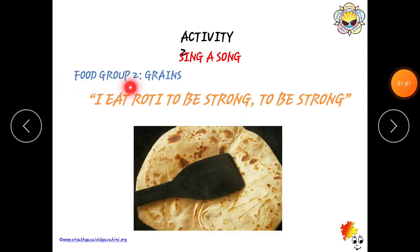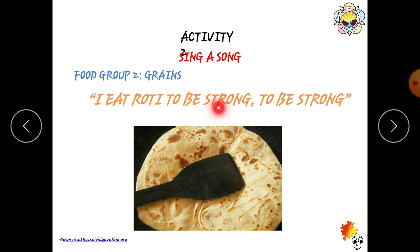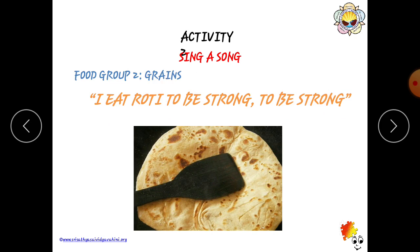Food Group 2 — Grains. Grains means kaalgalu. I eat roti to be strong, to be strong. Roti and chapatis are made up of grains. When we eat chapatis and roti, we become strong.